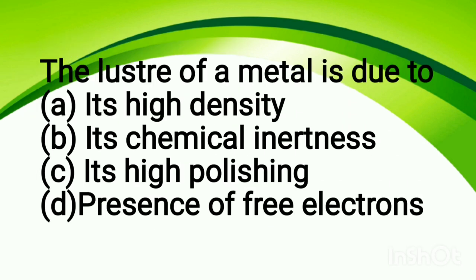The luster of metal is due to: option A, its high density; option B, its chemical inertness; option C, its high polishing; option D, presence of free electrons. The correct answer is option D, presence of free electrons.